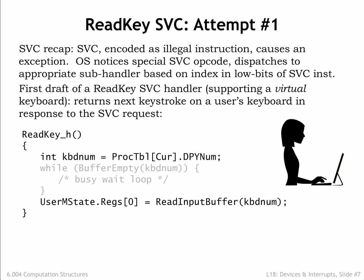Here's our first draft for the read key sub-handler, this time written in C. The handler starts by looking at the process table entry for the current process to determine which keyboard buffer holds the characters for the process. Assuming the buffer is not empty, the last line reads the character from the buffer and uses it to replace the saved value for the user R0 in the array holding the saved register values. When the handler exits, the OS will reload the saved registers and resume execution of the user-mode program with the just-read character in R0.